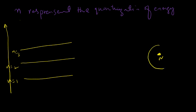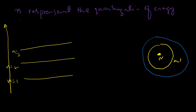Each shell corresponds to a different energy value. For example, here is the nucleus, and the first shell corresponds to n = 1, the second orbit corresponds to n = 2, and so on up to n = 3. These are called the K shell, L shell, and M shell. So n = 1 corresponds to the K shell and the first energy level, n = 2 to the second energy level, n = 3 to the third energy level, and n = 4 to the fourth energy level.